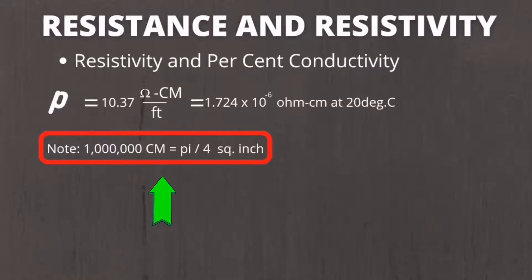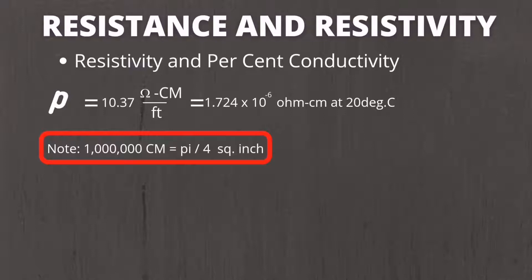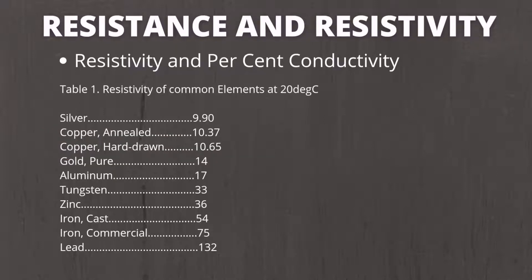We also have to take note that 1 million circular mil is equal to pi over 4 square inch by conversion. 10.37 ohm circular mil over feet is equal to 1.724 times 10 raised to negative 6 ohm centimeter, or simply 1.724 micro ohm centimeter. We will use one cubic centimeter of annealed copper at 20 degrees Celsius as a standard which has 100 percent conductivity.